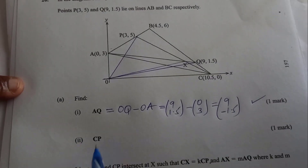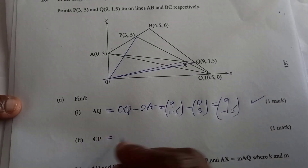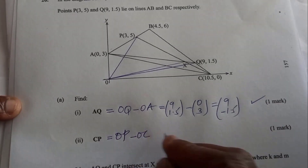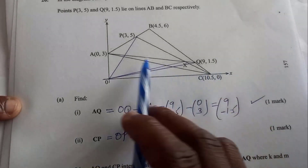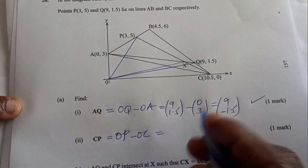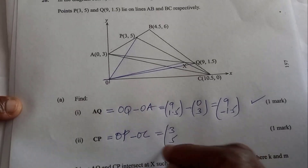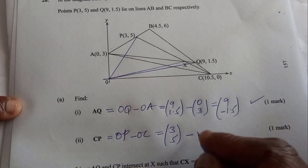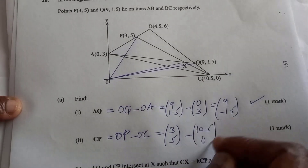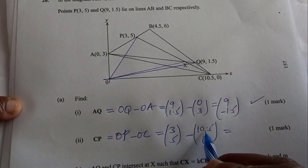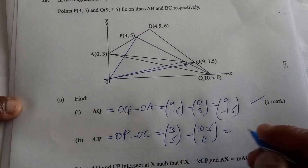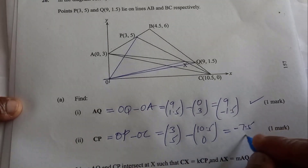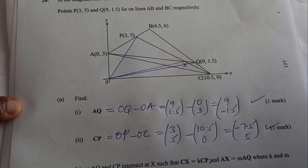So these would be: 9 subtract 0 is 9; 1.5 subtract negative 3 gives negative 1.5. So that is AQ = (9, −1.5). For CP, we get the position vector of P, which is OP, minus the position vector of C, which is OC. So OP is (3, 5) subtract OC which is (10.5, 0). That gives 3 minus 10.5 = negative 7.5, then 5 minus 0 is 5. So that is how you do it.